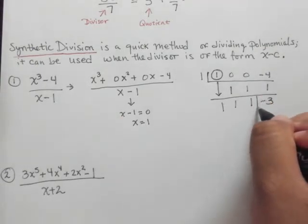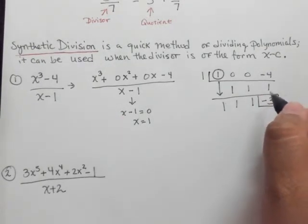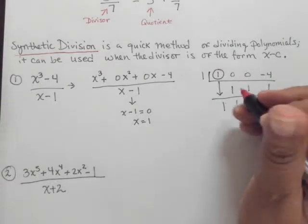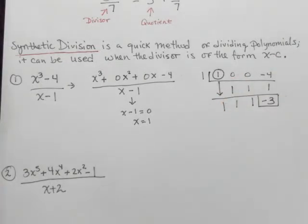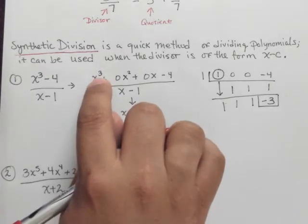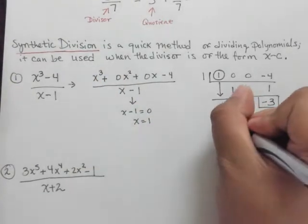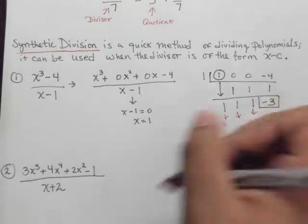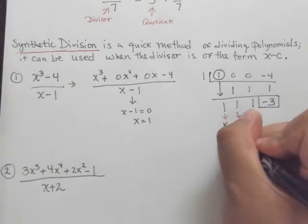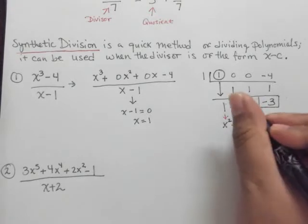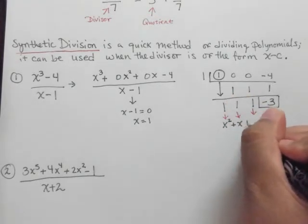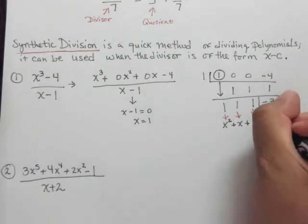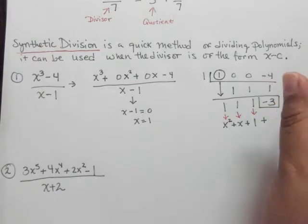Now assuming that you did everything correctly, of course, this last number is what we call the remainder. And if you take each of these terms, if you will, they correspond to 1 degree less than what the original dividend was. So if this is x cubed, this guy is going to be of the order x squared. All right? So I'm going to write x squared, and we're going to actually write all of those out. So this one will be x squared plus, because it's positive,